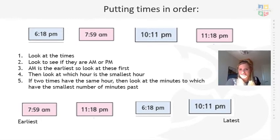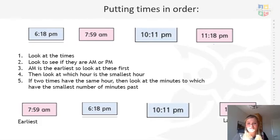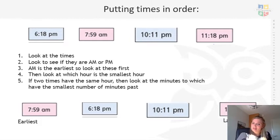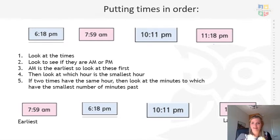Have a look at the next slide and I'll show you the correct order. You can now see the correct order: 7:59 AM because AM is first; then 6:18 PM because it's PM and 6 is the smallest hour; then 10:11 PM; and finally 11:18 PM. Well done if you spotted that mistake.